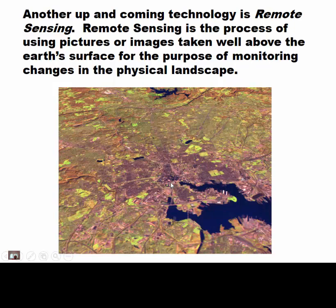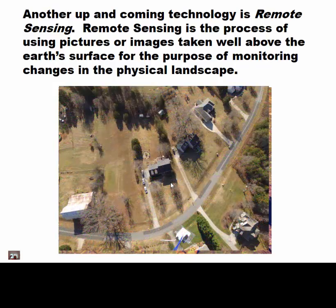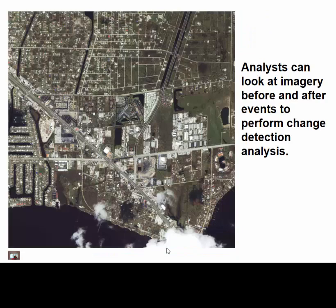This is what we call false color imagery — it doesn't show what our eyes see, but rather different wavelengths. I recently purchased a drone, so you can see a picture of my house as I fly it overhead. I've attached a sensor to collect temperature data to see what happens as we move up in the atmosphere.